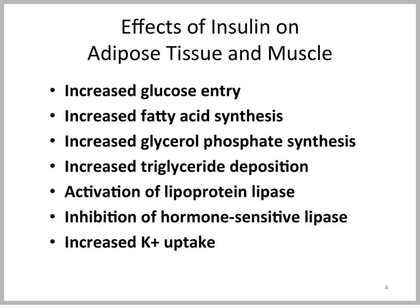Insulin has effects on adipose tissue and muscle, because these are insulin-dependent tissues. There, it increases glucose entry, fatty acid synthesis, and glycerol phosphate synthesis, which is later used for the production of triglycerides — the backbone of the triglyceride. So we have increased triglyceride deposition when insulin is present.